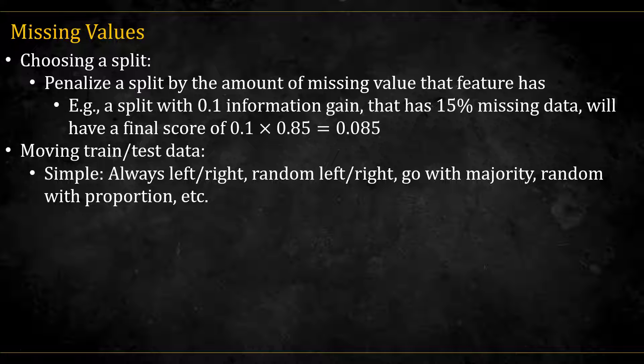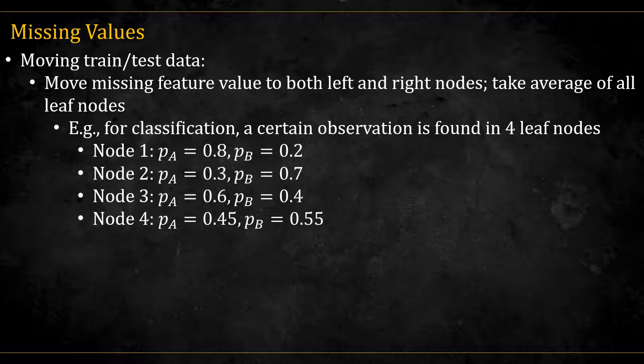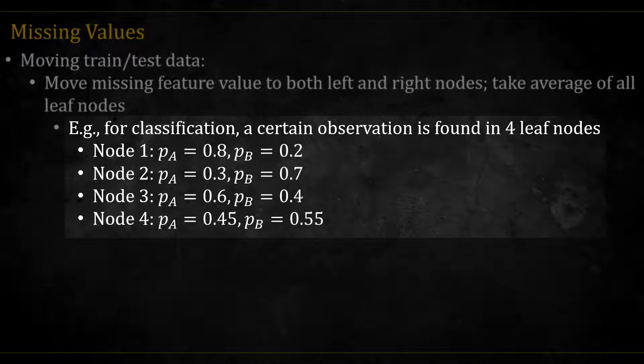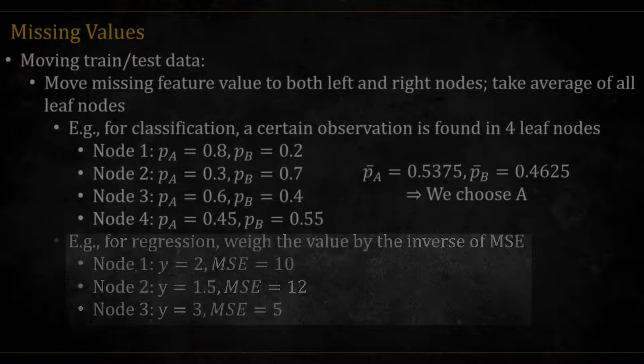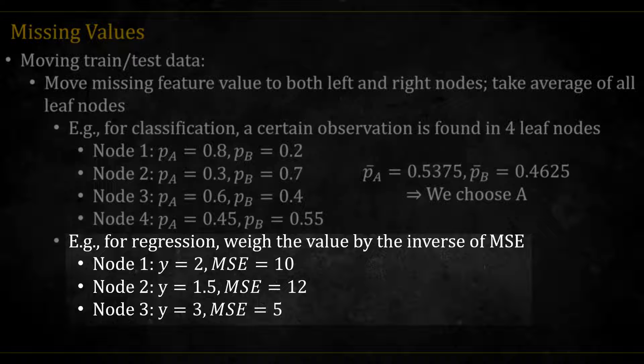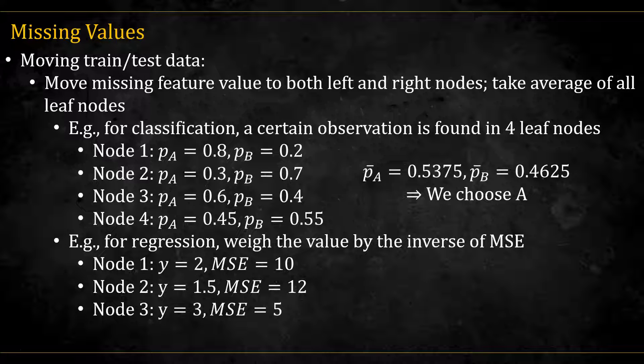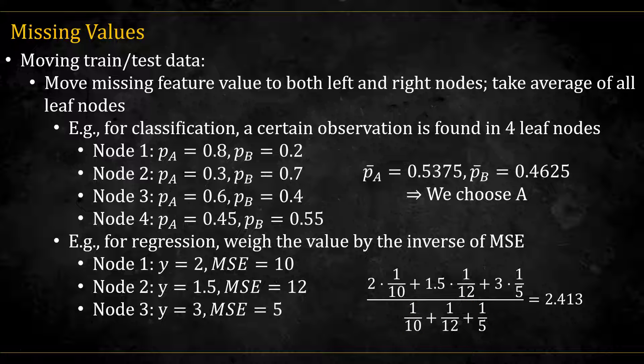As for data flow, there are simple approaches. We can choose that missing values always go to the left node, or always to the right. We can choose that it goes randomly to either side, or it can go with the majority of observations, or that it goes randomly with probability equal to the proportion, etc. Another option is to move all the values to both left and right nodes, and then average the final leaf nodes. For example, suppose that for a binary classification, we have a certain observation that reaches four terminal nodes with the following proportions in them. We can average these values and get that overall a is more likely, so we will label it a. For regression, suppose we have an observation reaching the following three leaf nodes. We can take a weighted average, where the weights are the inverse of the MSE or MAE. In this example, we do exactly that, and make sure to normalize the weights by dividing by their sums.